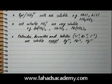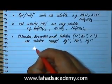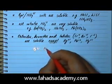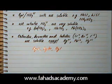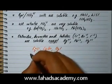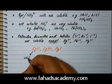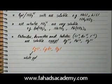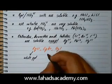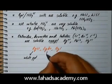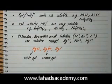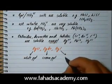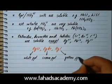An important extra point to remember is that silver chloride, silver bromide, and silver iodide are all insoluble and form precipitates — solids suspended in solution. AgCl forms a white precipitate, AgBr forms a cream precipitate, and AgI forms a yellow precipitate.